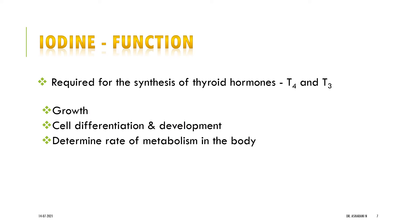Coming to the functions of iodine, the main function in the body is that it is required for the synthesis of thyroid hormones T3 and T4, which will be learned elaborately during thyroid hormone synthesis. This thyroid hormone in turn is used for growth, cell differentiation and development, and also determines the rate of metabolism in the body. That is why thyroid hormone estimation was previously used as an indicator of basal metabolic rate.